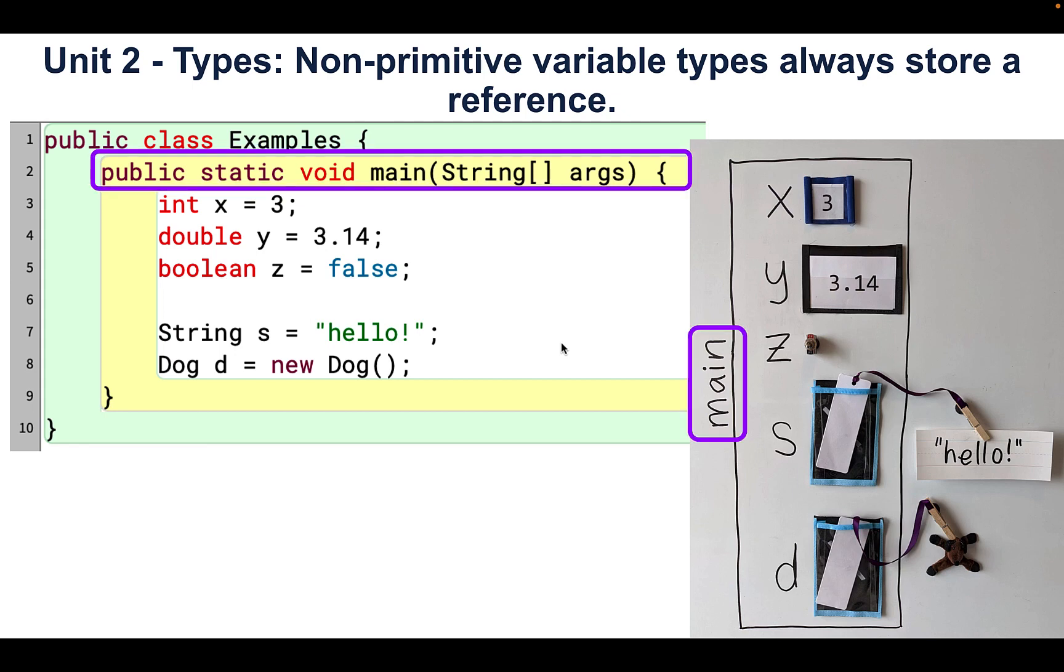When we run our class, we run the method public static void main string square bracket args. I drew a box for all the local variables inside the main method, and I labeled it with the name of the method, main.